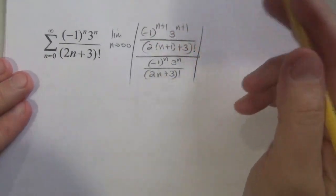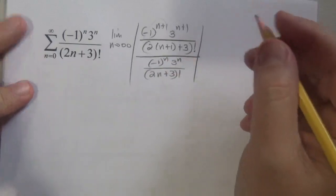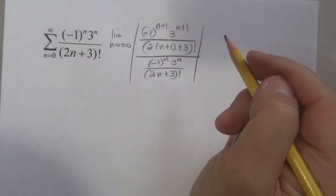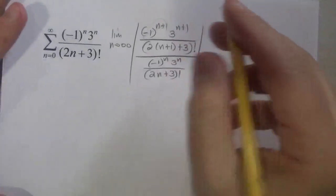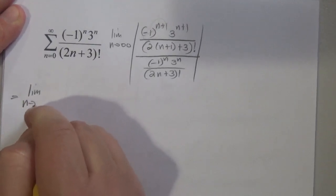The absolute value bars just make sure it stays positive, so all these negative things can go away. I'm going to lightly cross those out. They're going to go away in the next step. I'm going to flip and multiply over here, so this is the limit as...